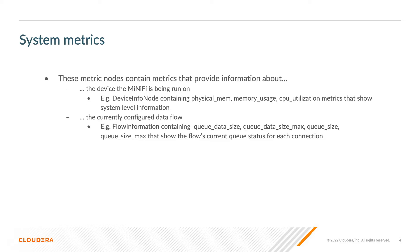For example, the system metrics can include the device info node, or the process device info node metric node, which can contain physical memory, memory usage, and CPU utilization metrics, which are part of the system level information. On the other side, we have flow information, for example, which is a metric node that contains queue data size, maximum queue data size, and other flow related information.